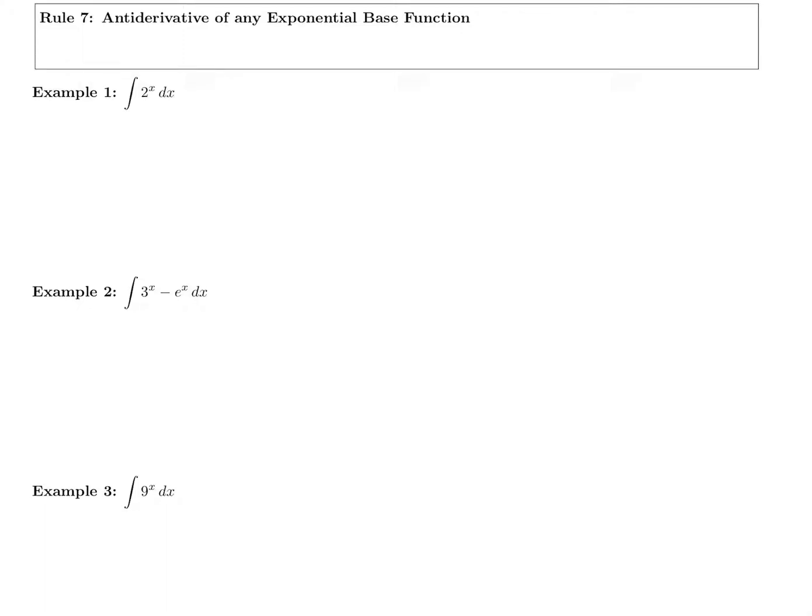Here is our last rule. Some good review about derivatives. The derivative of 2 to the x was ln of your base times your base to the original power. So ln of 2 times 2 to the x.